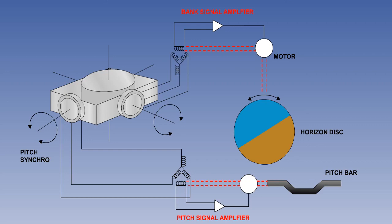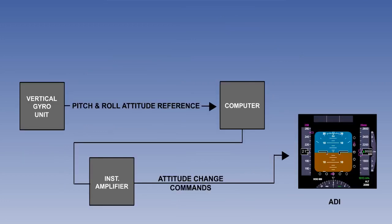Servo motors rotate to position the pitch bar and the horizon disk to indicate the changing attitude of the aircraft. The principle is the same for an electronically generated ADI, and the image of the ADI is generated by a colour cathode ray tube or liquid crystal display.